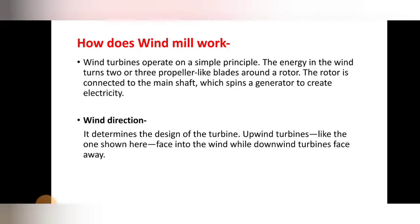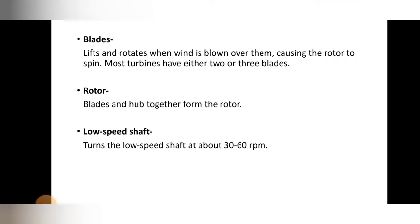Some important components are involved in the generation of electricity and in the working of the windmill. First: wind direction. Wind direction determines the design of the turbine. Upwind turbines, like the one shown here, face into the wind, while downwind turbines face away. That is why wind direction is important.